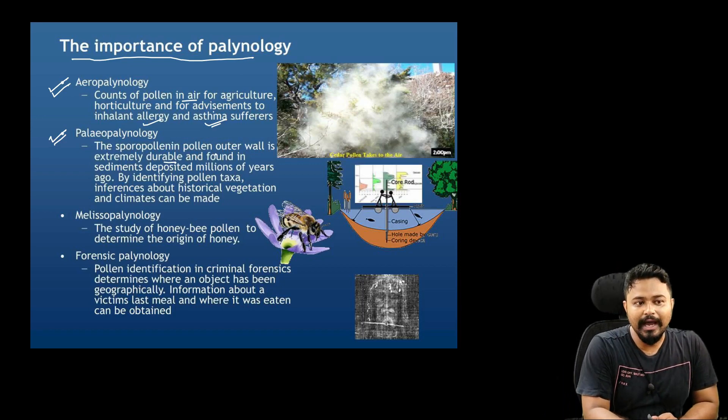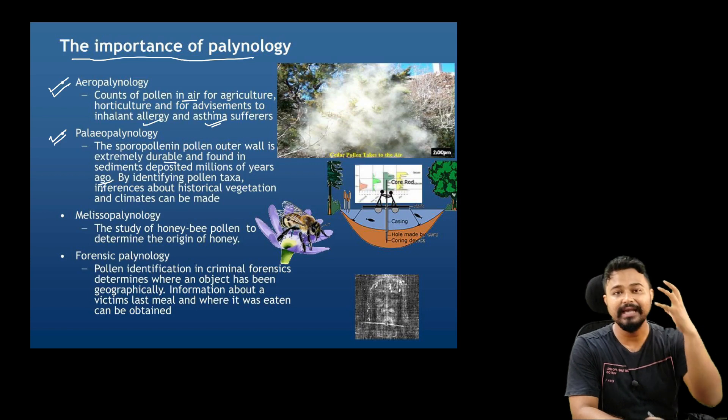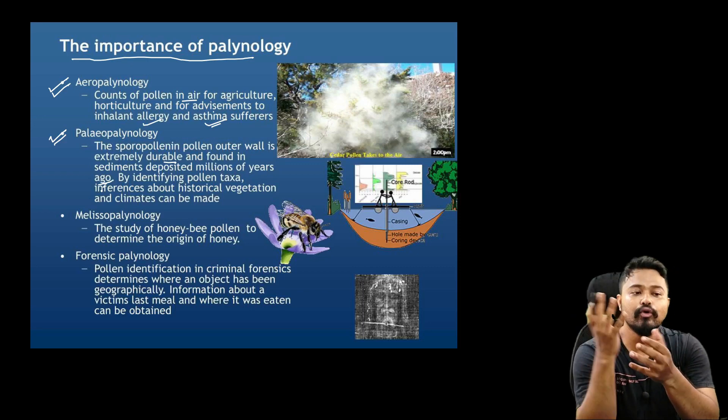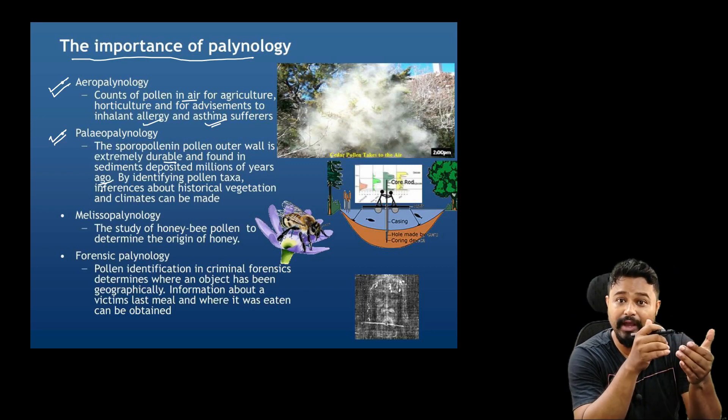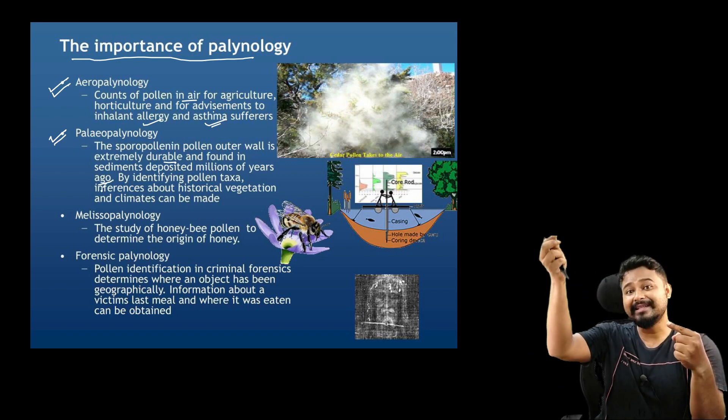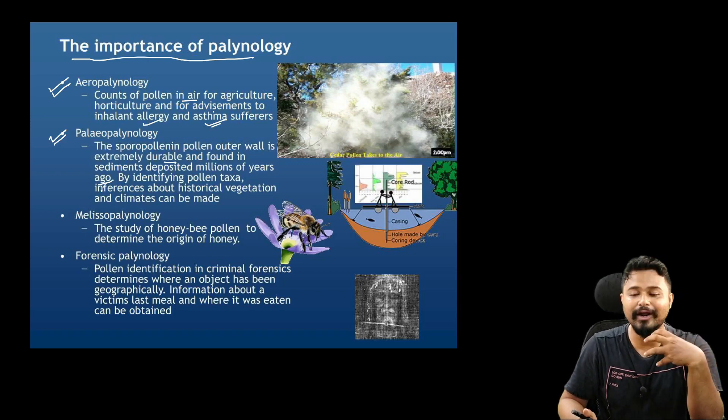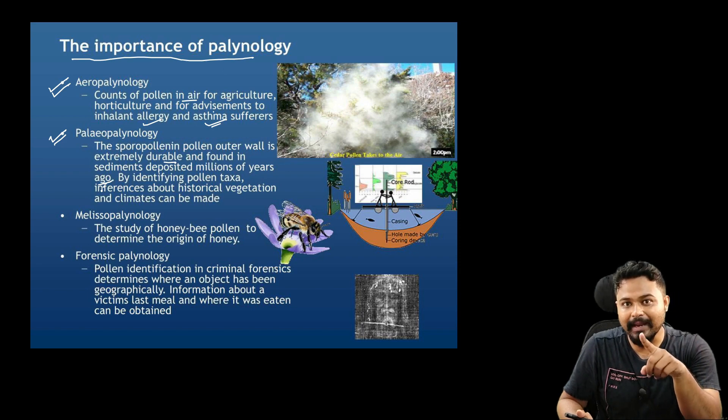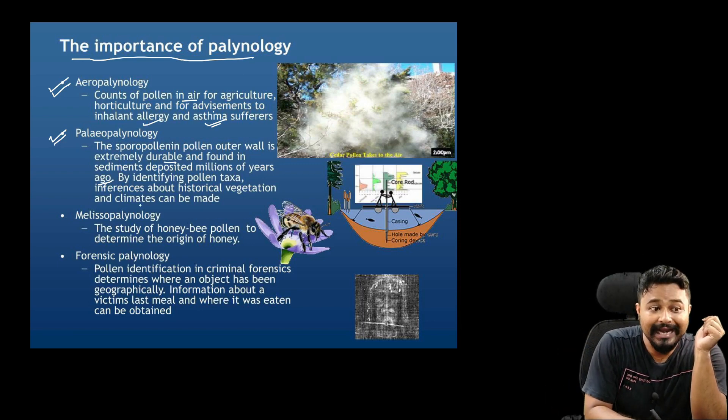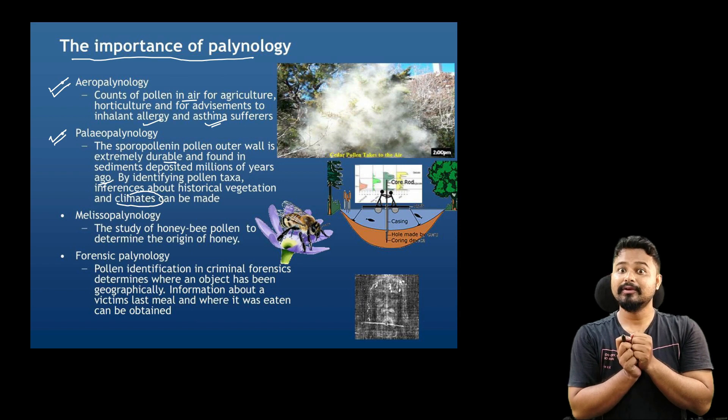This pollen outer layer is extremely durable and found in sediments deposited millions of years ago, in rocks and ice. By studying these ancient pollen, we can obtain historical evidence of what kind of plants existed at that time. From these plant pollens found in rocks and ice, paleopalynology study helps us obtain historical evidence regarding vegetation, plantation, and climate.